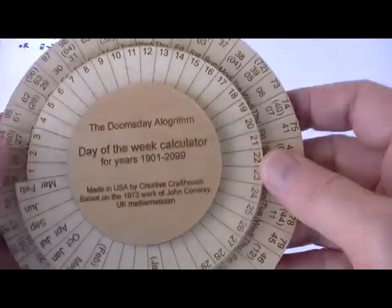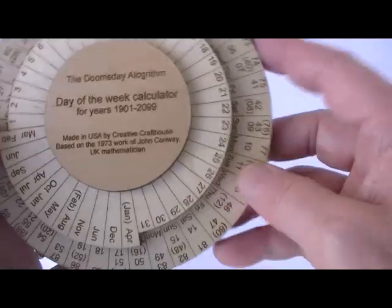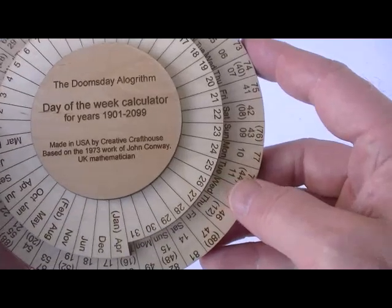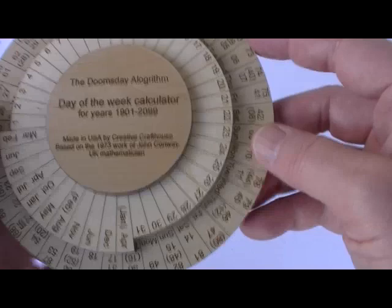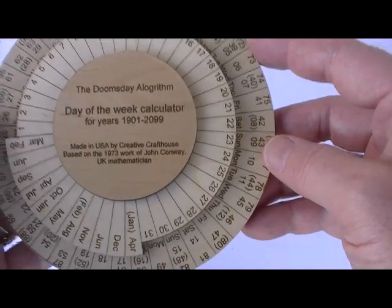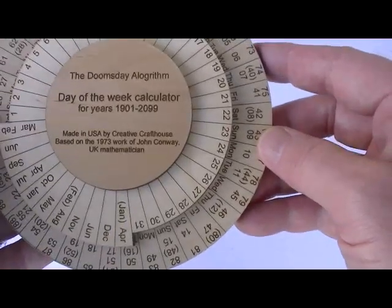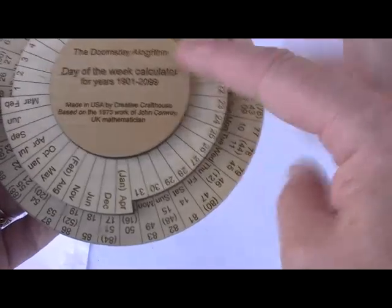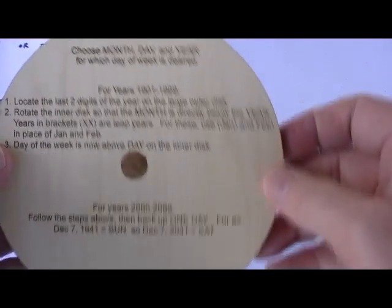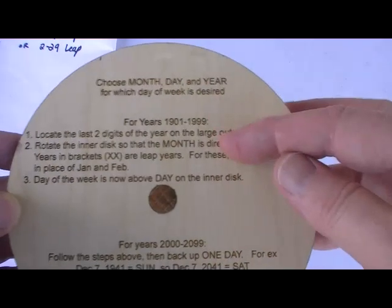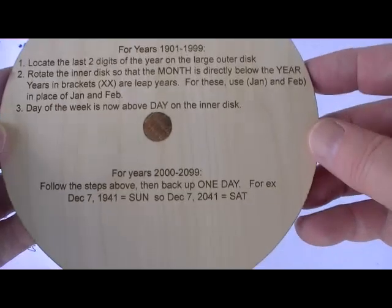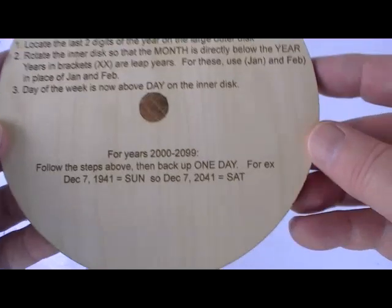Now, the next thing to be aware of is that you will read the days directly for the 20th century, that is years in the 1900s. But because the 21st century is a different anchor date, and I'll explain that shortly, you will need to back off one day. The rules here, I've tried to make it self-contained, and the instructions for how to work it are all contained on the back. So you haven't got to worry about losing a piece of paper.